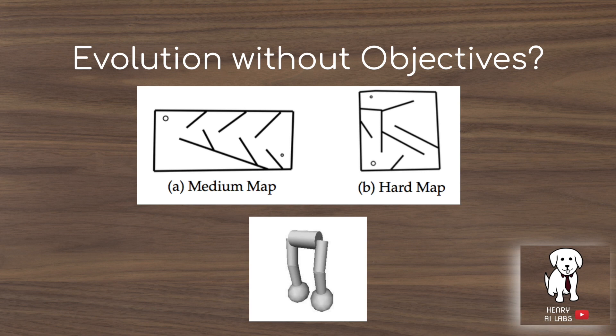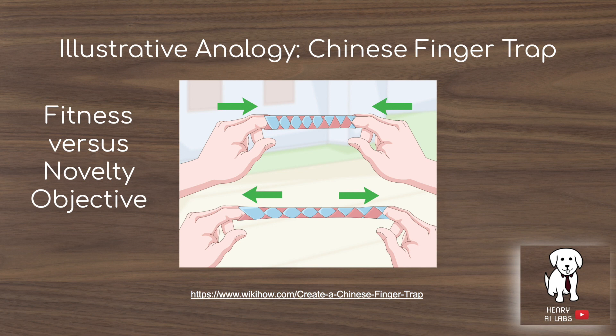The idea of novelty search is to have evolution without an explicit fitness objective function. An illustrative analogy is the Chinese finger trap and how fitness compares with the novelty objective to escape from this trap. If you use just a fitness function — basically measuring how far away your fingers are from the trap — you would just pull out and never escape. But if you explore novel behaviors like pushing in and pushing out, then you'll escape from the Chinese finger trap.